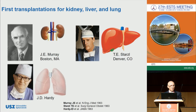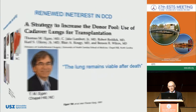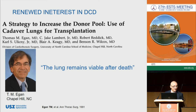Looking back at the history of solid organ transplantation, the first kidney, liver, and lung transplantations were all performed using DCD donors. Since then, the definitions of brain death were established and donors who met brain death criteria were accepted. In 1992, Thomas Egan reintroduced the concept of DCD lung transplantation following a series of dog and rat experiments. This concept was based on the fact that the lung may remain viable for a certain period after death as a result of the oxygen reserve present in the alveoli.